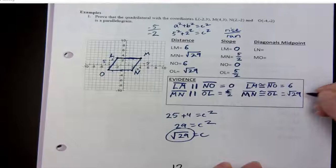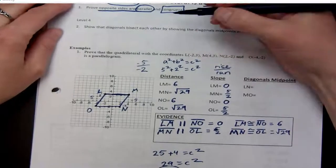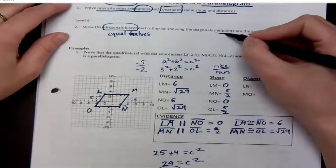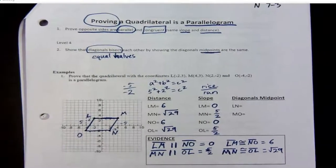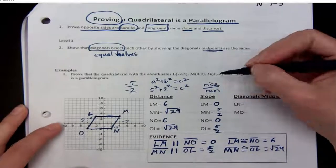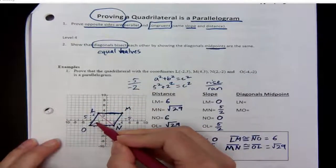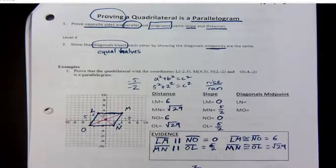The level 4 approach is to work with the diagonals. Another way to show a parallelogram is that the diagonals bisect each other — remember, bisect means equal halves. We find equal halves by showing the midpoints are the same. We're going to find the midpoint of each diagonal — the ones that cross the center. If the midpoint of MO equals the midpoint of LN, then the diagonals bisect each other, so we use the midpoint formula.